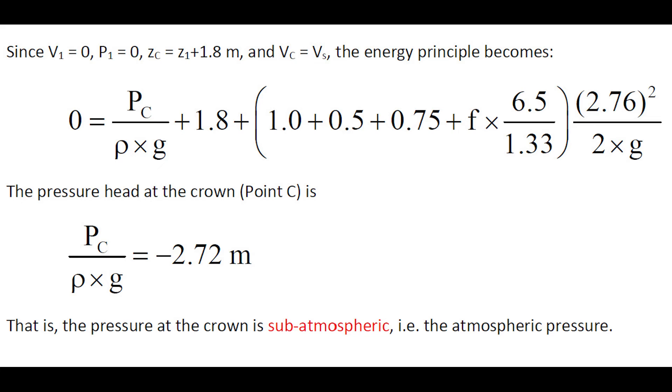Then we can modify the energy principle. In turn, we find the pressure head at the crown is minus 2.72 meters, that is the pressure at the crown is less than atmospheric.